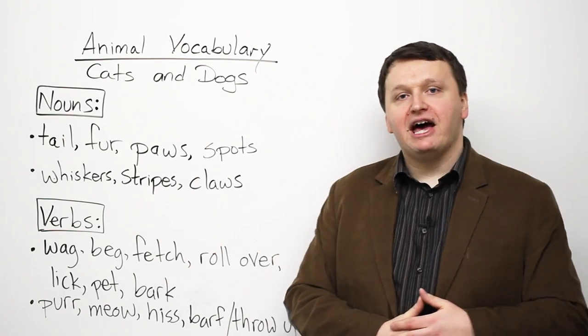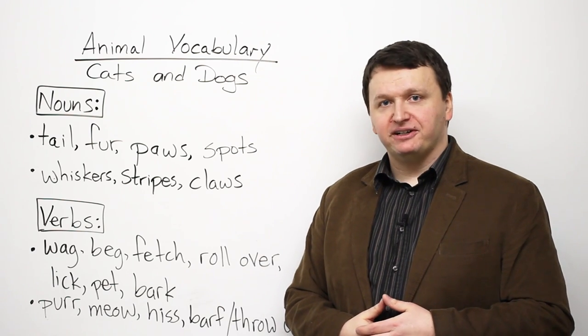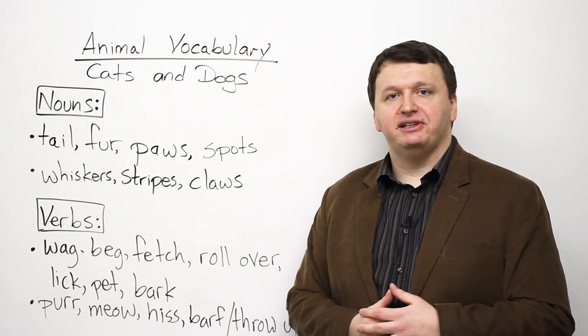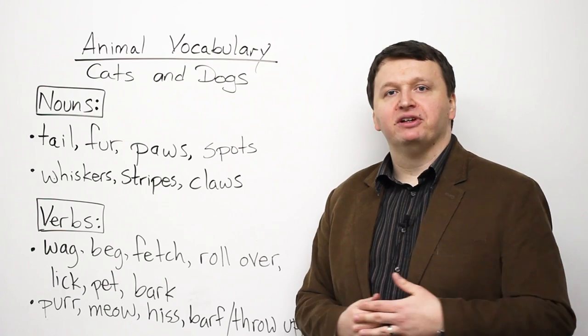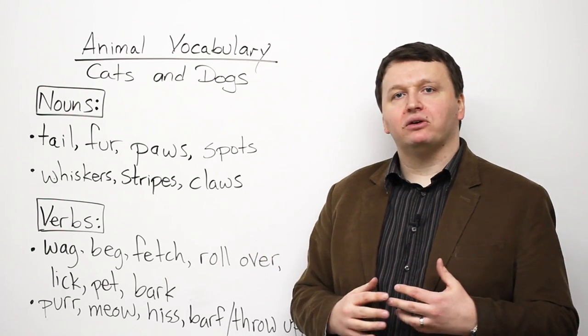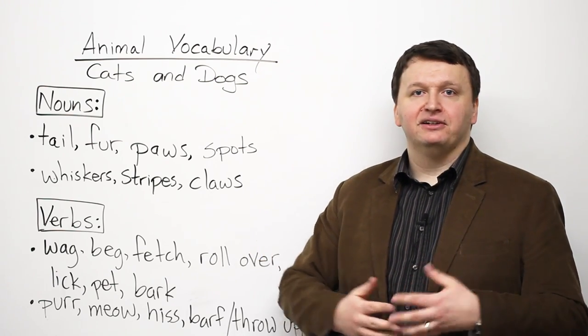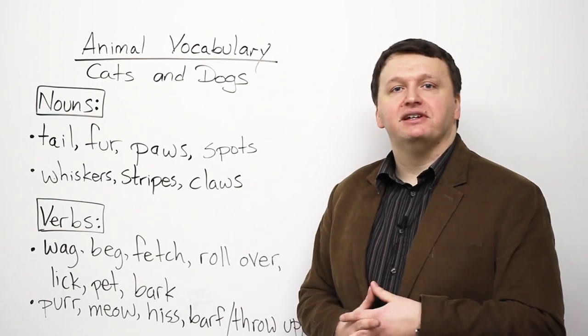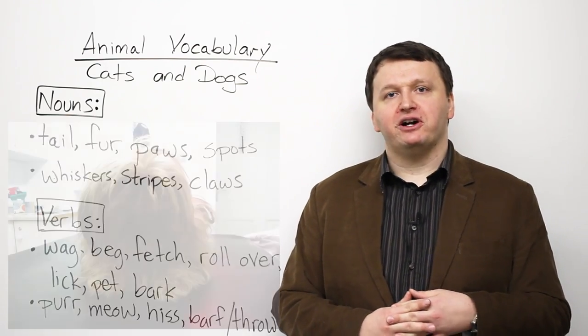Next, we have fur. Fur is basically the hair on an animal. So the hair on a dog, or the hair on a cat, or the hair on almost any animal is called fur. F-U-R, fur.